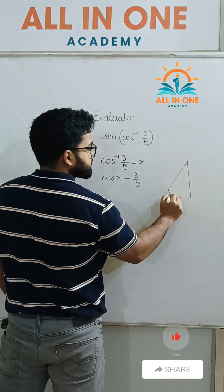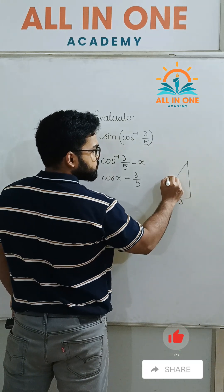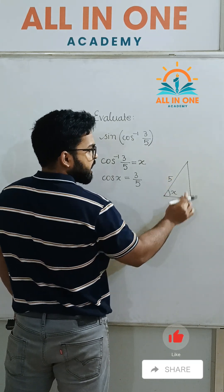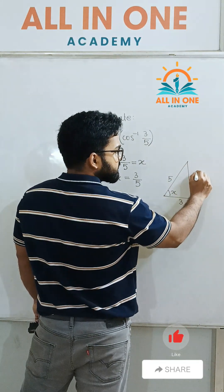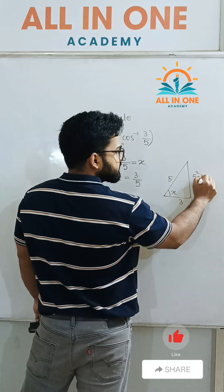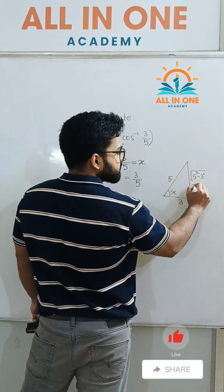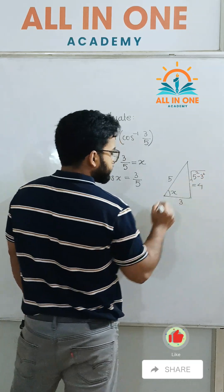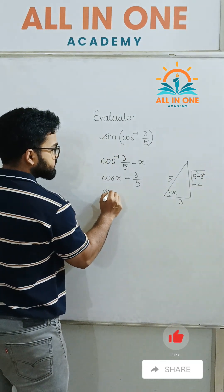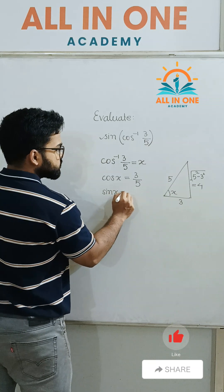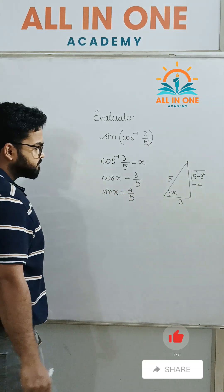So cos x = 3/5. Using the Pythagorean identity, we compute √(5² − 3²), which gives us 4. So sin x is going to be 4/5.